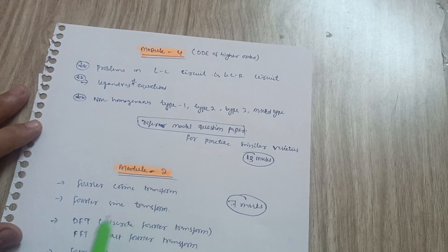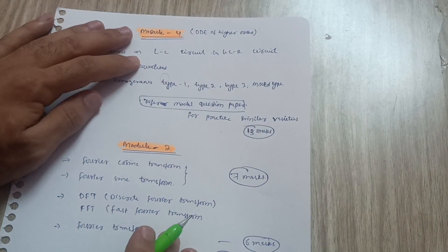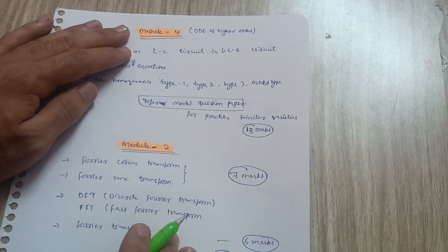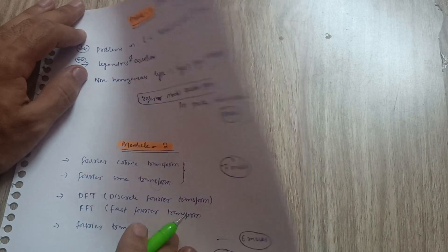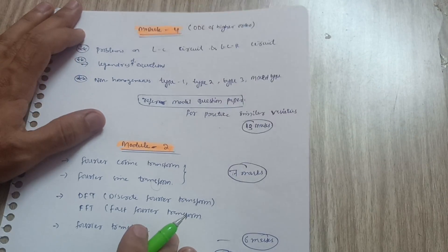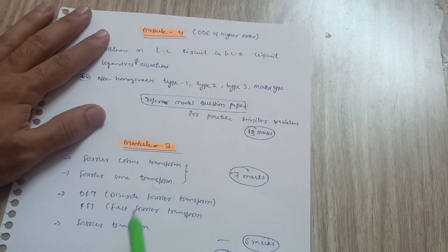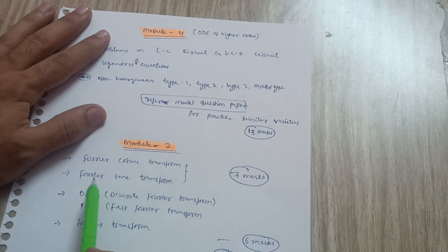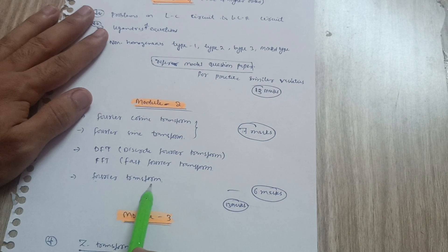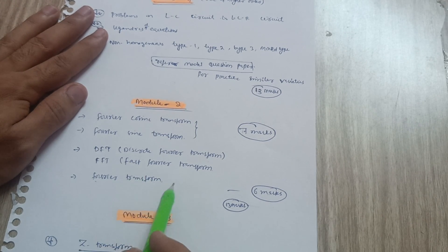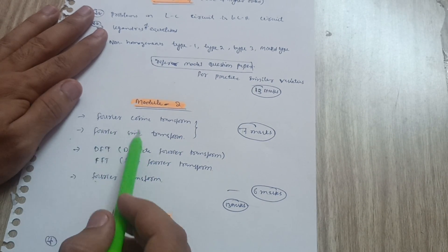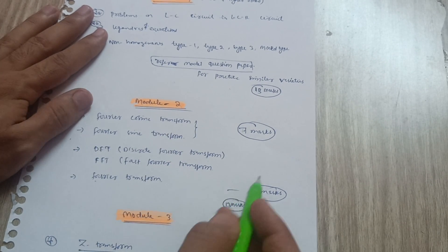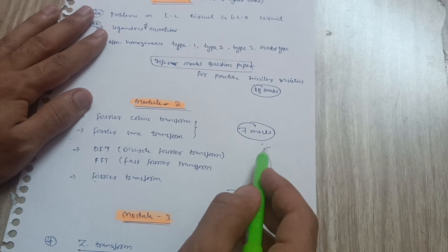For Module 2, cover only two concepts: the Fourier cosine transform and the Fourier sine transform — these are simpler, formula-based topics. Also go through the basic Fourier transform, where the question will be 'find the Fourier transform of a given function.' Do confirm with your faculty whether a data handbook will be provided in the exam. From Module 2, target approximately 13 marks.